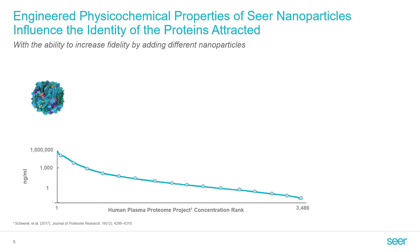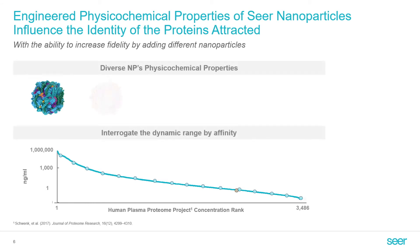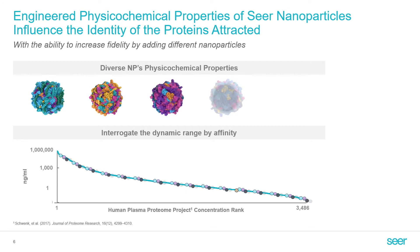The sampling is selective and highly reproducible for a given nanoparticle design. By adding new particles, we can continue to sample additional proteins across the entire dynamic range of the proteome without complex workflows. Each individual particle type is performing its own independent sampling.